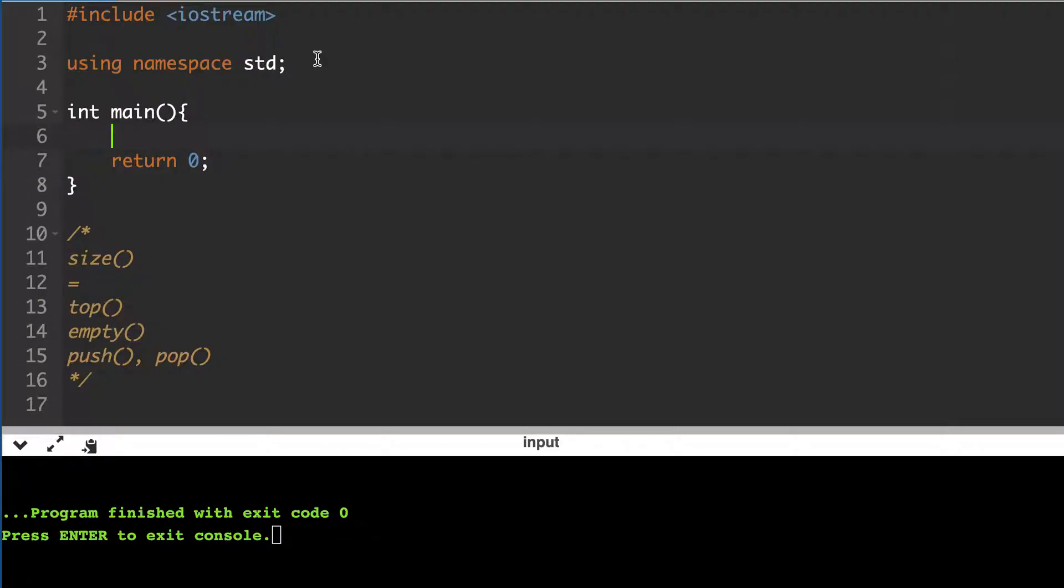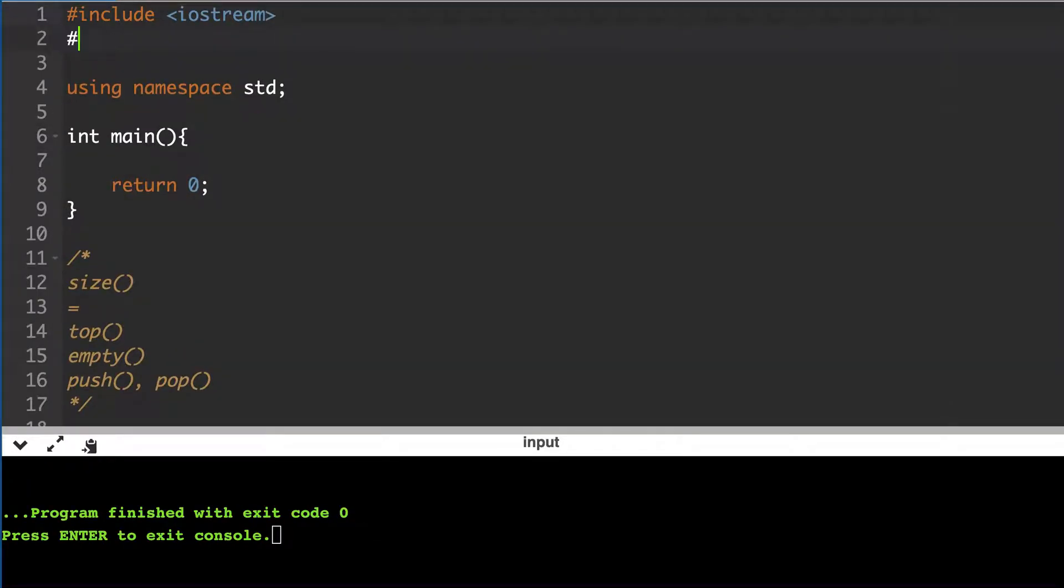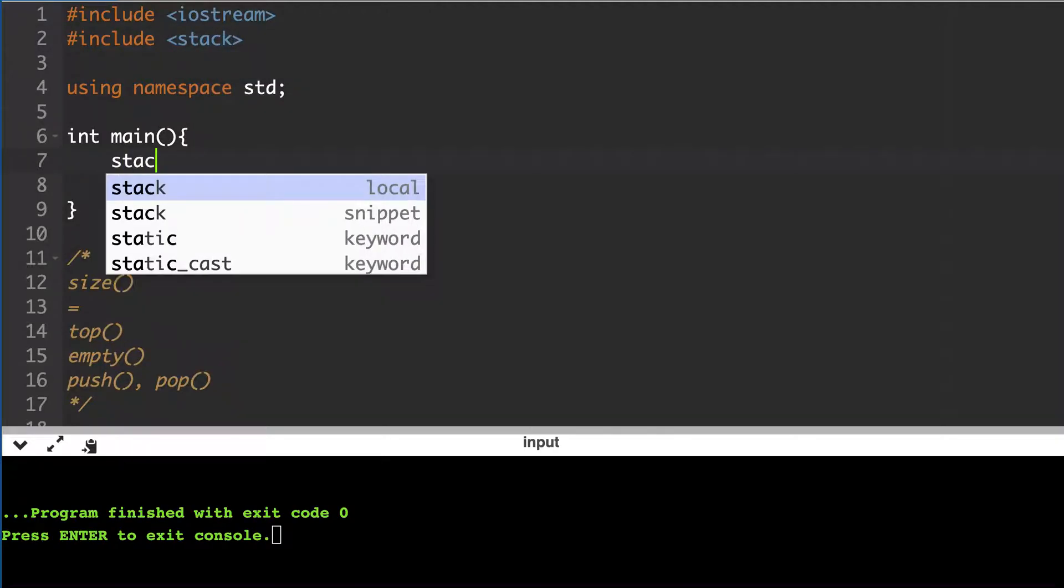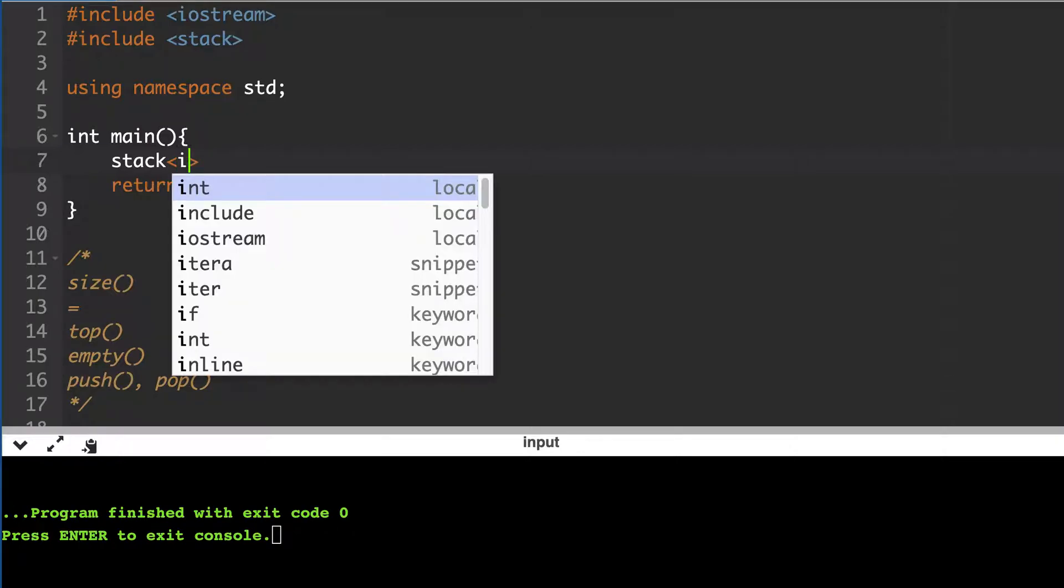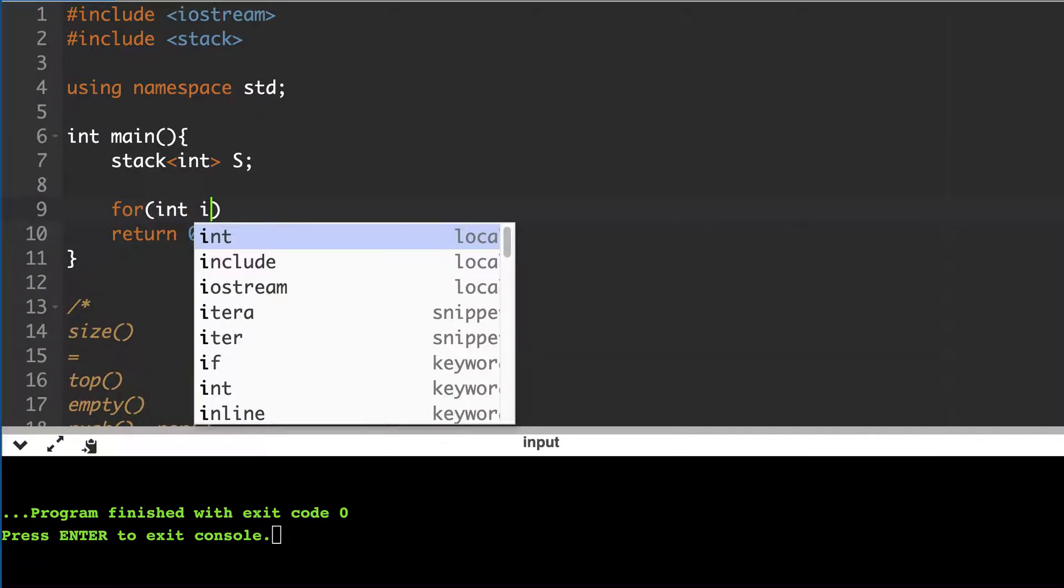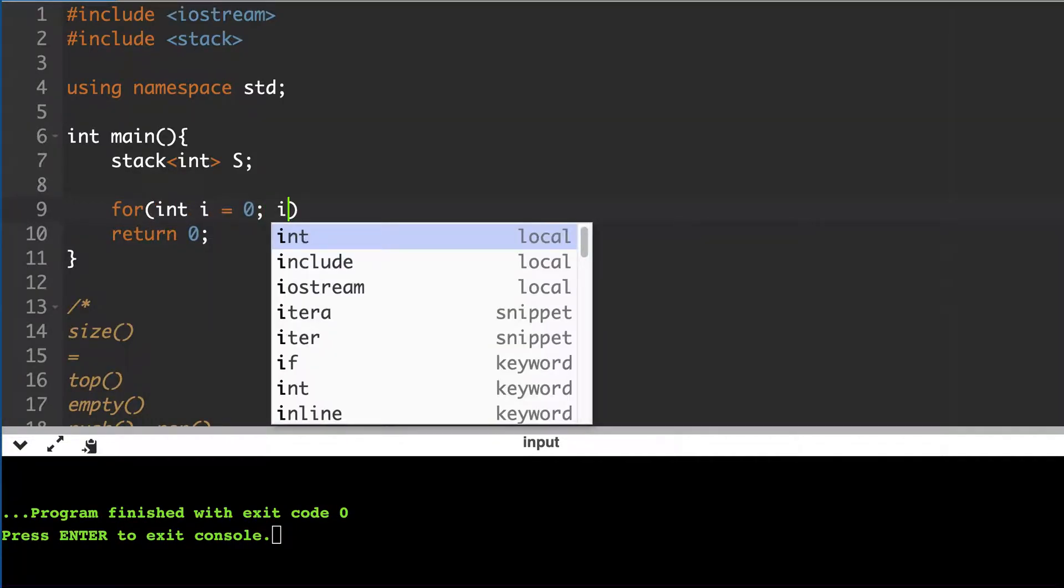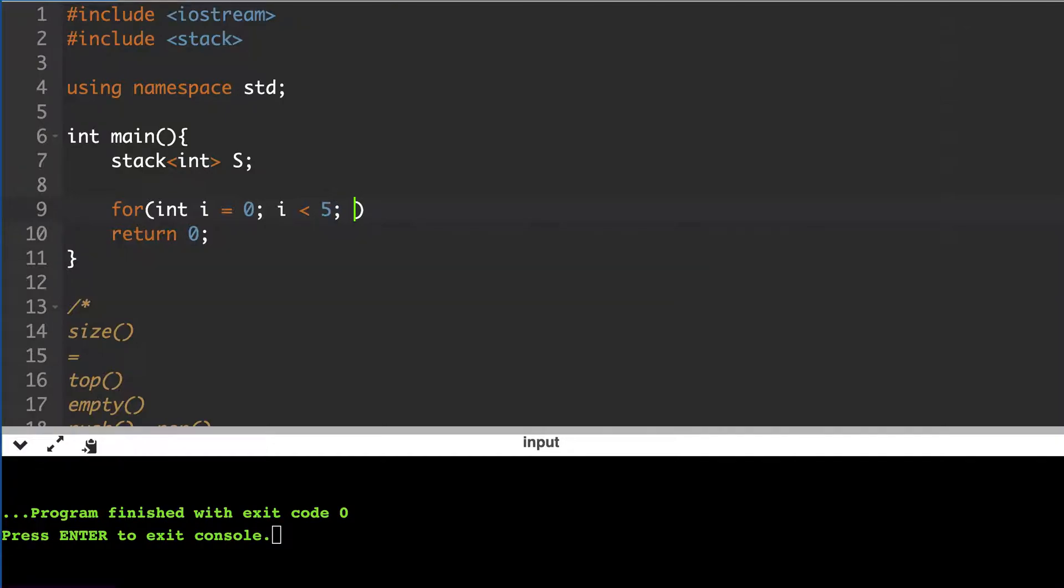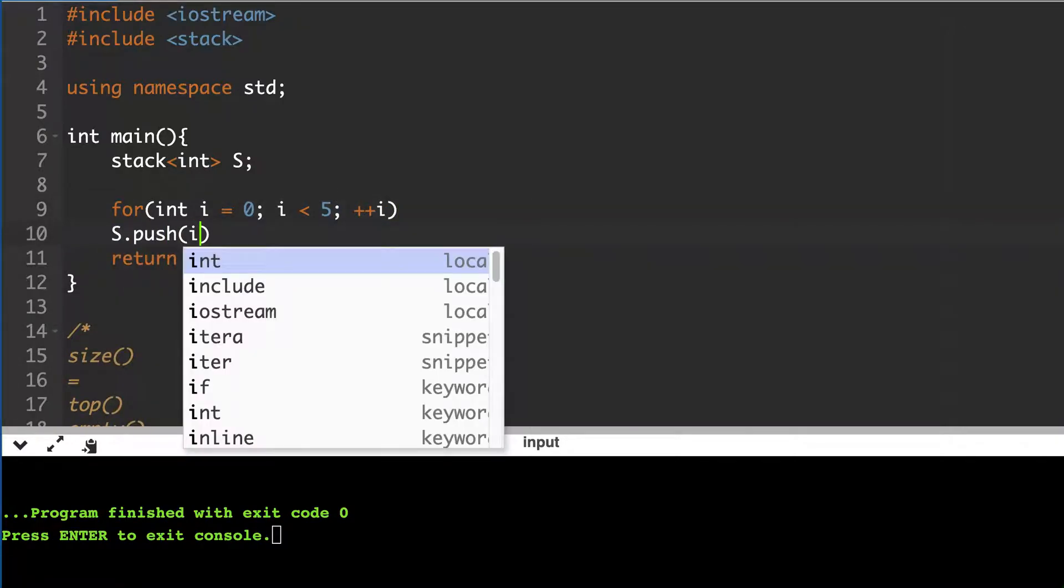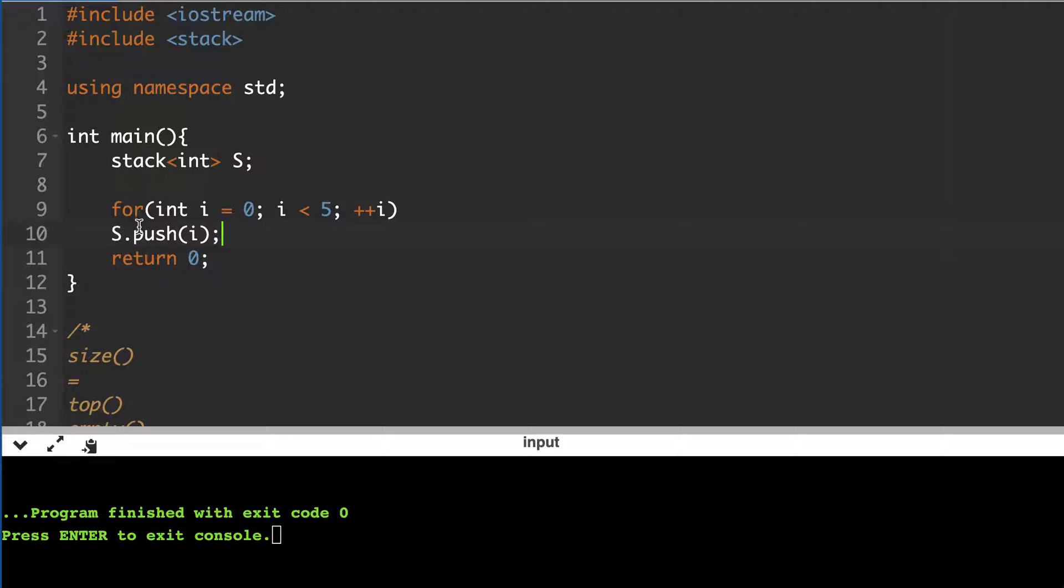Now let's write some sample code where we will use all these functions. First we need to include the stack header file, then we will create a stack of int and insert a few elements to it. So now we have pushed five elements to the stack.